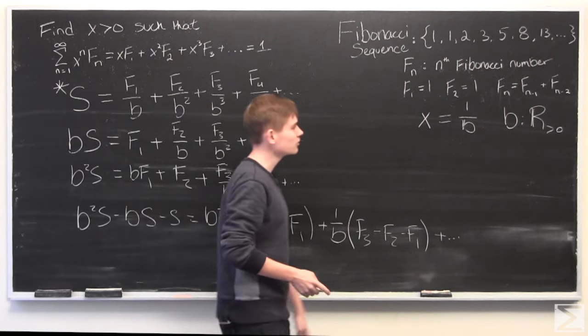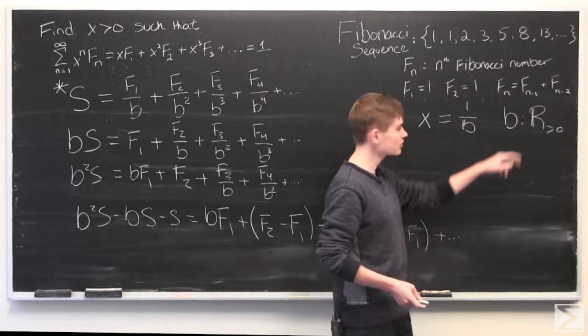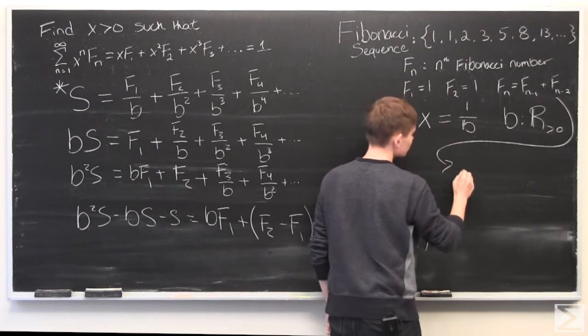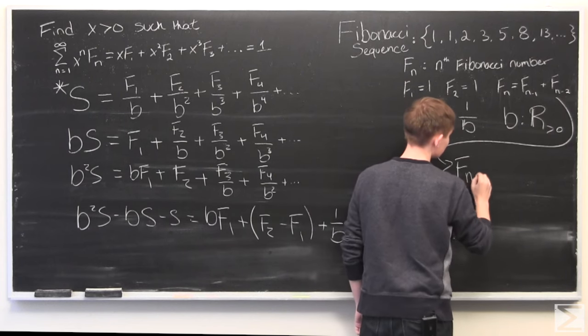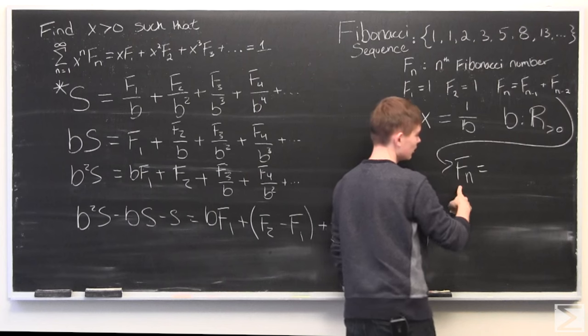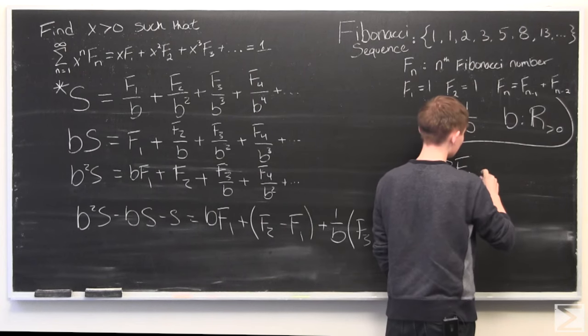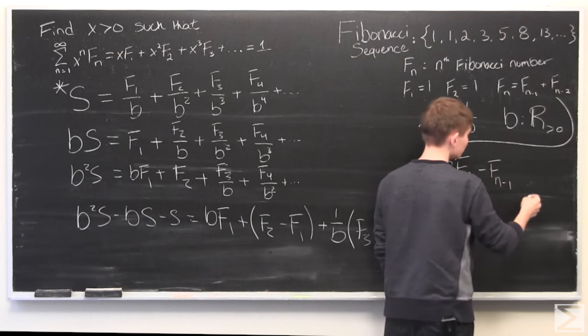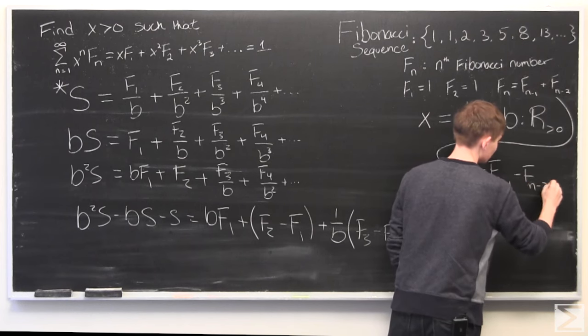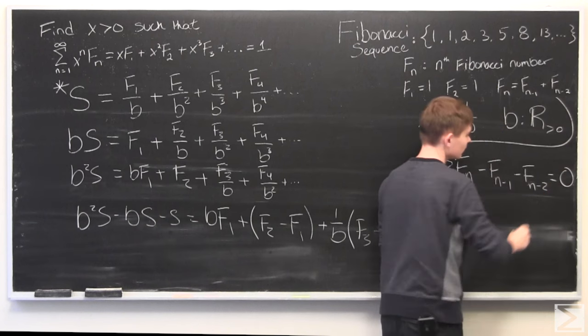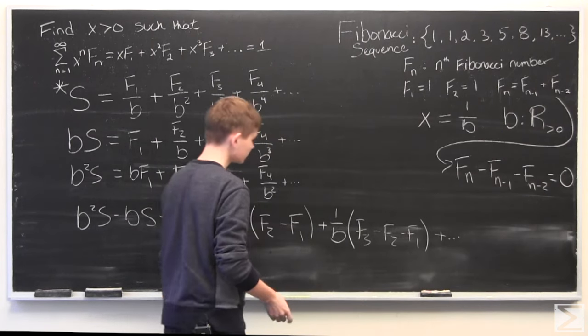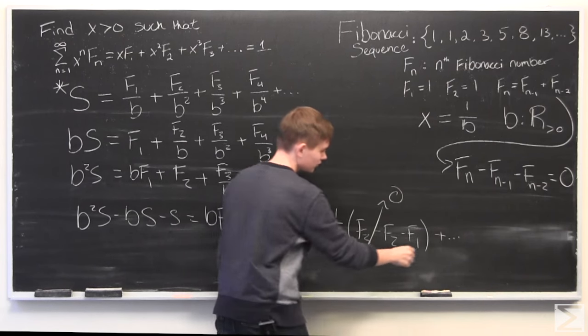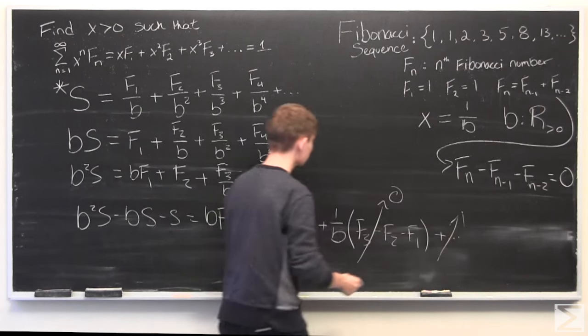Now, since the Fibonacci sequence is defined like this, we can also say that an nth Fibonacci number minus the n minus 1th Fibonacci number and the n minus 2 Fibonacci number is equal to 0. And so, this is equal to 0, and all the subsequent ones are going to be equal to 0.